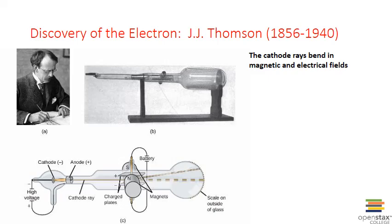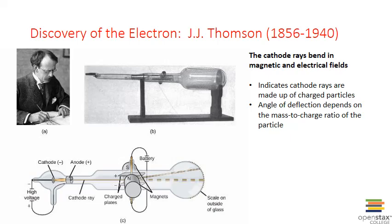The only way this deflection could happen was if the cathode rays were actually made up of charged particles. Furthermore, how much their path was bent could be determined by the mass-to-charge ratio of the particles — a relative measure of how big the particle is compared to the amount of charge on it. J.J. Thompson measured how much the path was bent through these different fields using a scale on the outside of the glass, measuring the angle of deflection relative to an undeflected cathode ray. Based on this angle of deflection, he calculated the mass-to-charge ratio of the cathode ray particles.